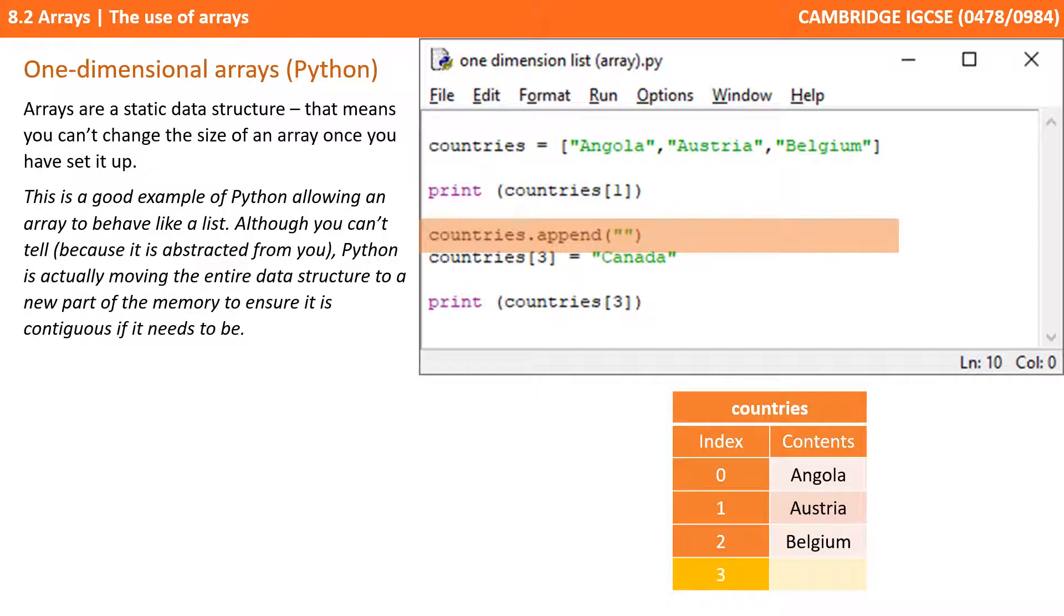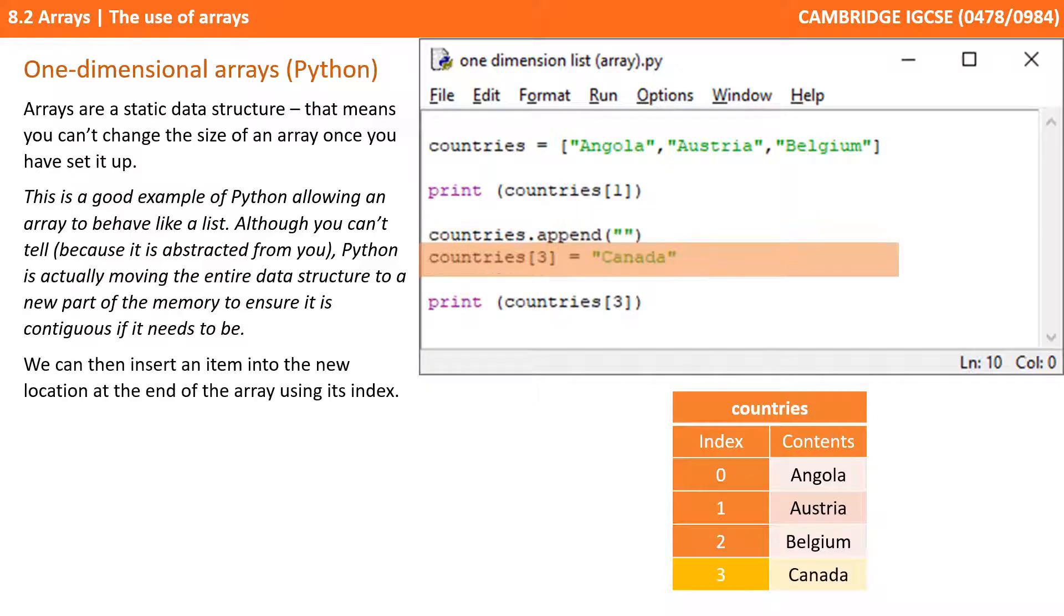Arrays can be thought of as static data structures. That means you can't change the size of an array once you've set it up. Now, this is actually a good example of Python allowing an array to behave like a list. Although you can't tell because it's abstracted from you, Python's actually moving the entire data structure to a new part of memory to ensure it's contiguous if it needs to be. But all that is hidden from you as the programmer.